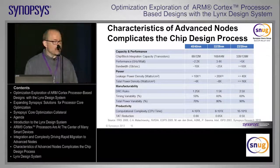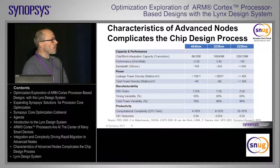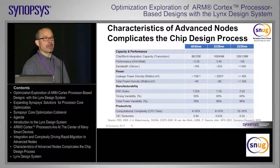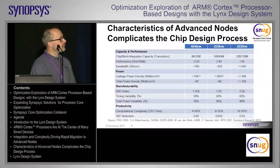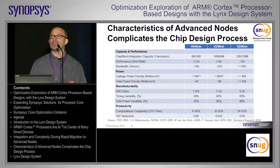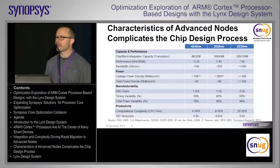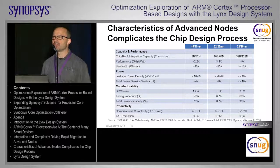If we think about 90 nanometers as a normalization point of one, and then consider capacity and performance — the sheer number of gates and frequencies — plus power, manufacturability, and productivity, and then look at the transition to different design nodes, we can truly see that age of exponential. All of those factors are multiplying in complexity, making your job as a design engineer very difficult.